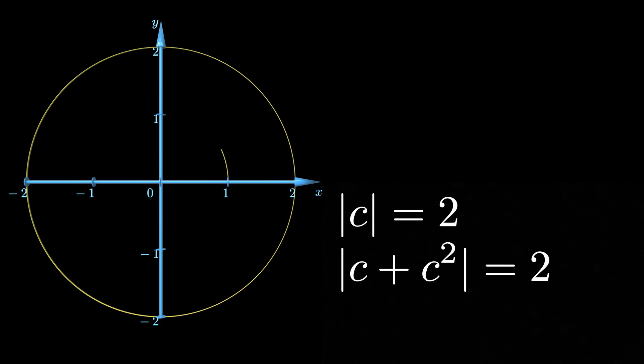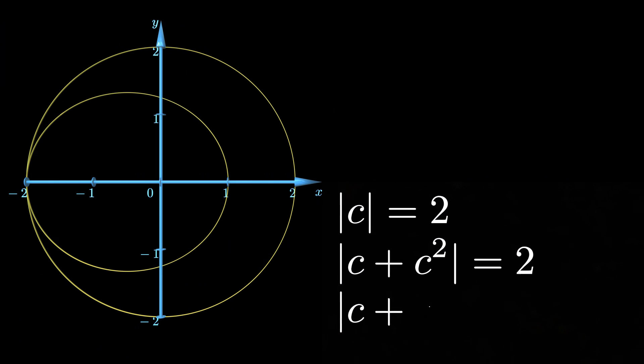When the largest power of the polynomial, also known as degree of the polynomial, gets larger, smaller features appear in the shape of the solutions.